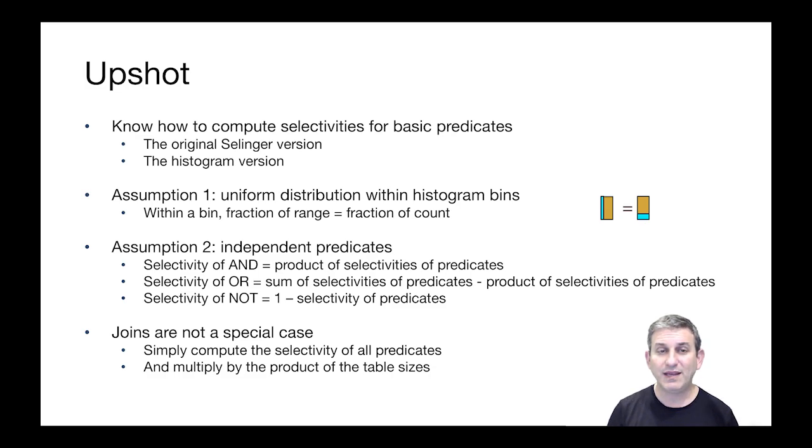The second assumption that we made is the independence of predicates in these expressions. Because predicates are independent, the selectivity of the AND of two predicates is the product of the selectivities of those predicates.